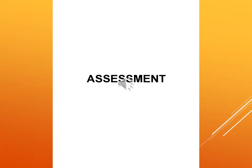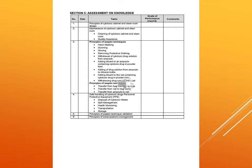Section 5 is the assessment on knowledge. Tasks include principles of cytotoxic cabinet and clean room design, maintenance of cytotoxic cabinet and clean room, quality assurance, principles of aseptic techniques including hand washing, garbing, gloving, transfer from bag or bottle to syringe, transfer from vial to bag or bottle, transfer from ampoule to vial, safe handling of cytotoxic drugs including PPE, disposal of cytotoxic waste, spill management, health monitoring, transportation and storage, aseptic technique validation, and principles of extravasation management. Grade of performance and comments by the preceptor are also included.